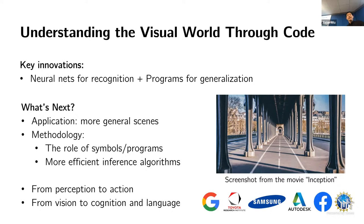Thanks Jiajun so much for giving such a great talk. Now, if anyone has any questions, feel free to ask them. I have a quick question: I was really impressed by how you were able to decompose all the intrinsic parameters of the vase. But what if you had more scenes where the object isn't phonetically centered, or there are multiple objects in the scene? What are the challenges for the current approach and how do you think you could resolve some of these?